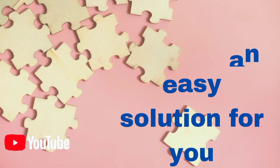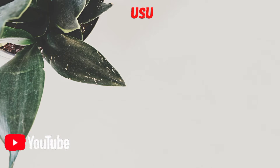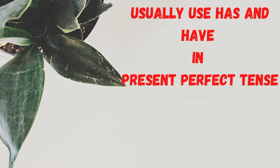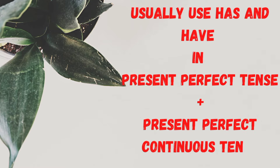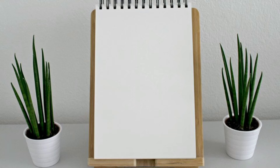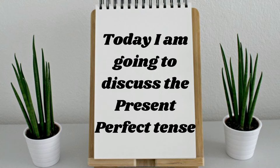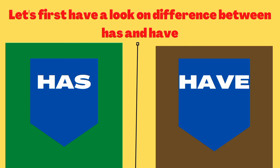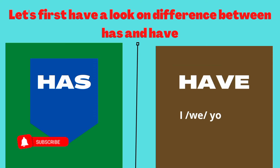We usually use has and have in present perfect and present perfect continuous tense. Today I'm going to discuss about present perfect tense in this video. Let's first have a look at the difference between has and have.